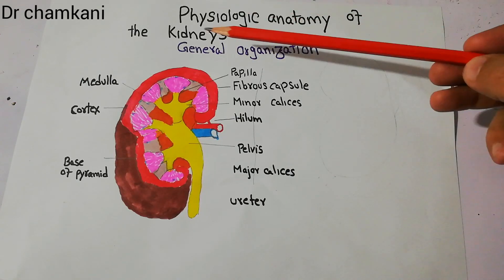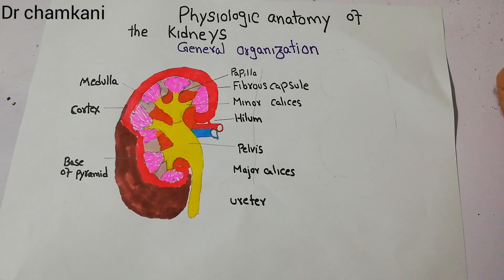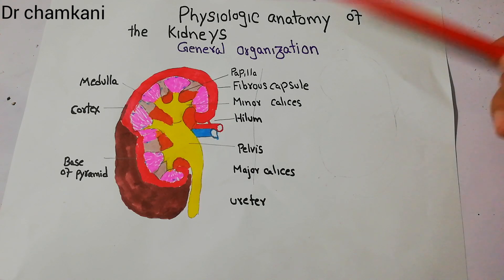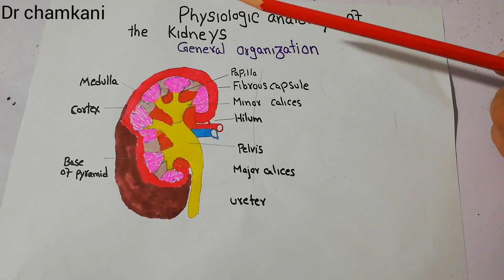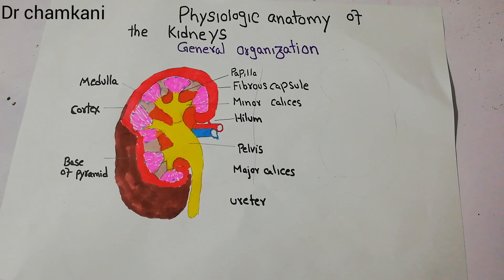In this lecture we will talk about physiologic anatomy of the kidneys. As we have started our new chapter about urine formation, it is now important to understand the general organization of the kidneys and how the kidney performs its multiple functions.